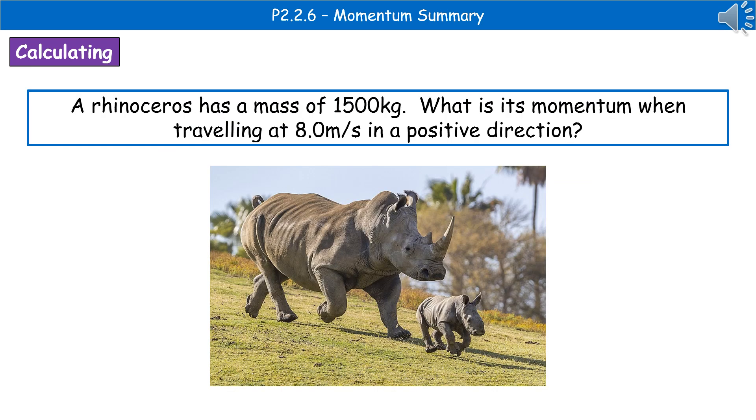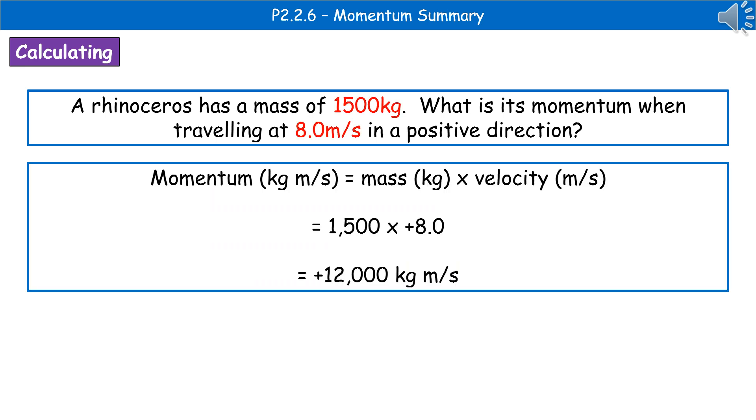To give you an example of the kind of question you could be asked about momentum, I've given you one here. A rhinoceros has a mass of 1,500 kilograms. What is its momentum when traveling at 8 meters per second in a positive direction? First thing we're going to do, as always with a calculation question, is highlight, underline, circle or jot down the key bits of information from the question itself.